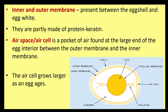The air space or air cell is a pocket of air found at the large end of the egg, located between the outer membrane and the inner membrane. The air cell grows larger as an egg ages.